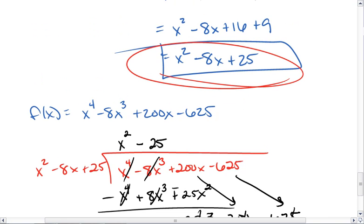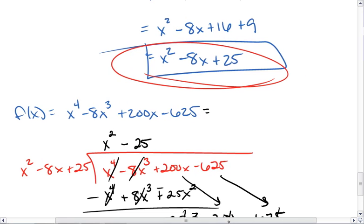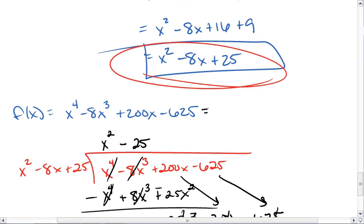So f of x, which equals this 4th power function, also equals x squared minus 8x plus 25 times x squared minus 25.